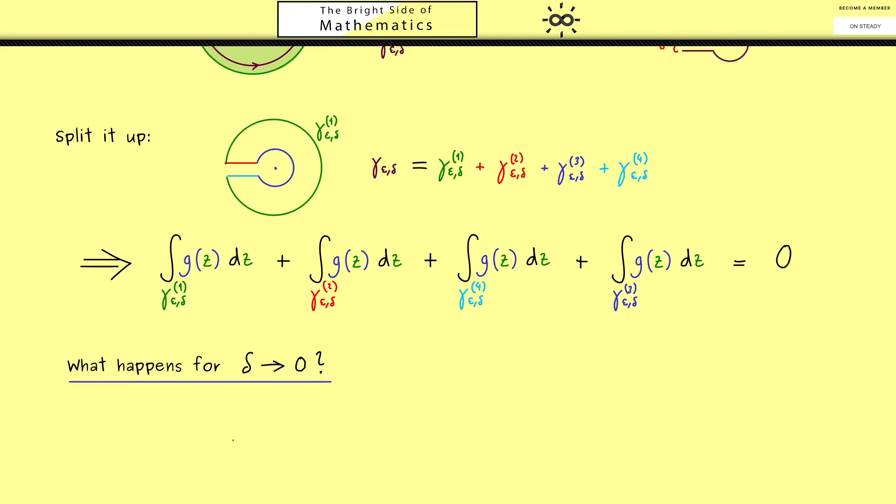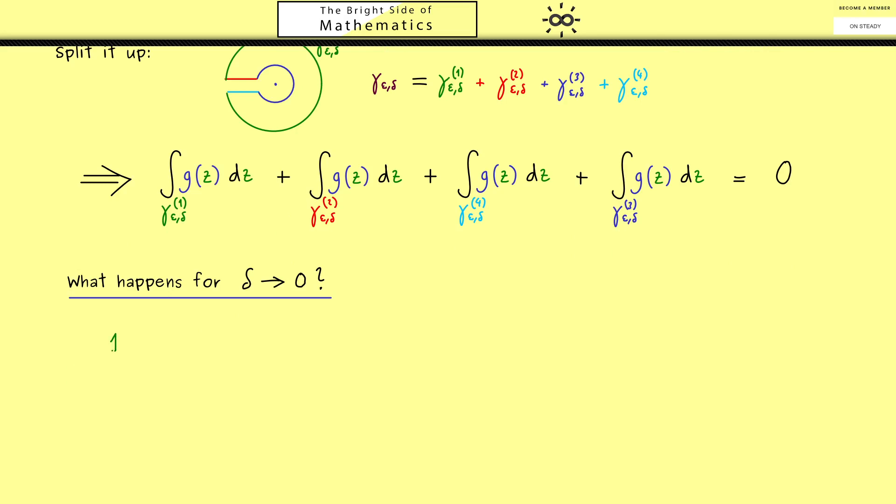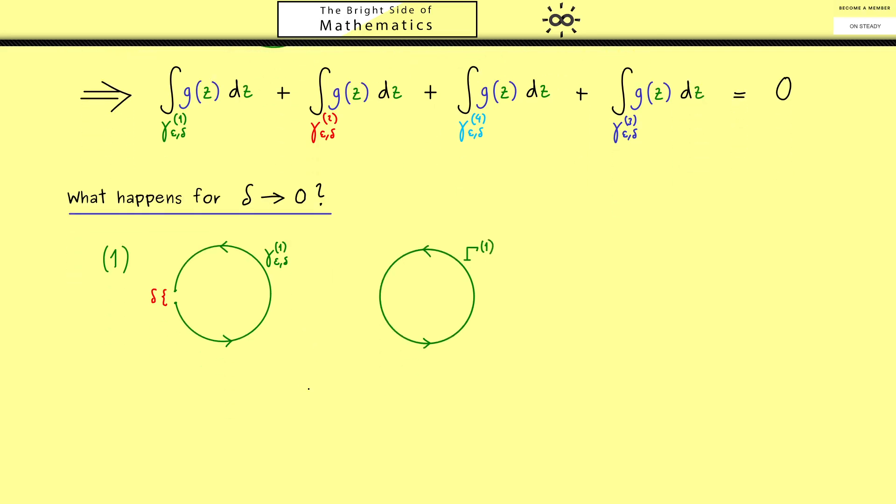In other words, let's start with the first one, gamma 1. There you should immediately see if we set delta to 0, we have the full circle. Therefore, let's call this curve capital gamma with index 1. Then let's look what is the difference between both contour integrals. So we consider the absolute value between the one and the other one.